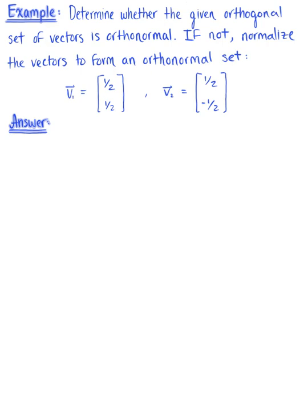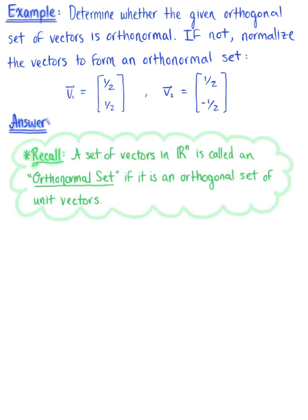Determine whether the given orthogonal set of vectors is orthonormal. If not, normalize the vectors to form an orthonormal set. To begin, let's recall that a set of vectors in Rn is called an orthonormal set if it is an orthogonal set of unit vectors.